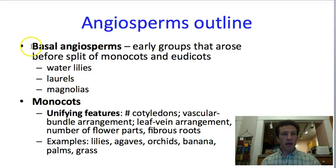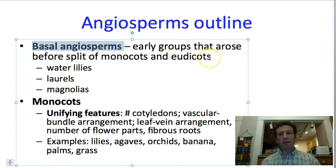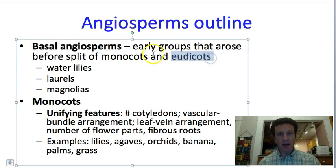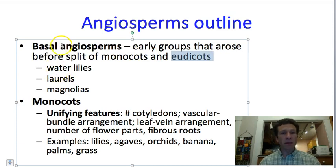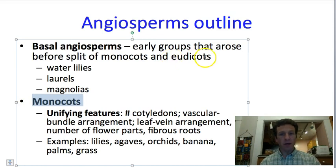We will start today by talking about the basal angiosperms. These are groups that arose before the split of the monocots and what we'll call the eudicots. The eudicots are specifically the dicots that came after this split. Groups of basal angiosperms that we'll talk about include the water lilies, the laurels, and the magnolias. We'll then move on to talking about the monocots, which were one of the two major groups that occurred at the split with the eudicots.